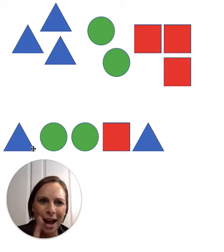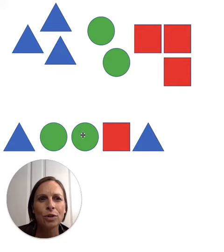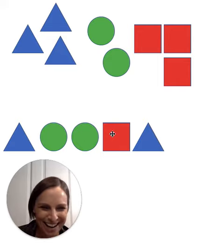So I'm going to now talk through it. So we've got triangle, circle, circle, triangle. No, that's not right. Let me try it again.